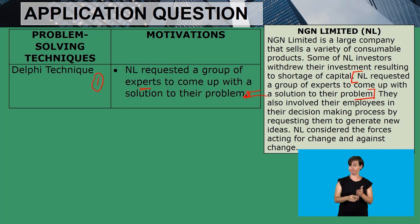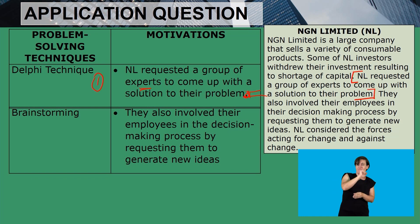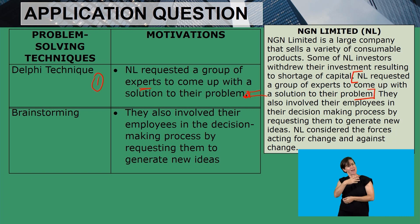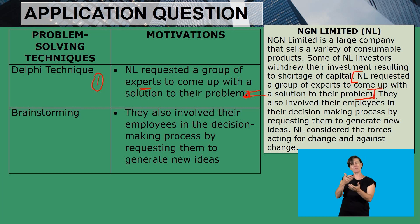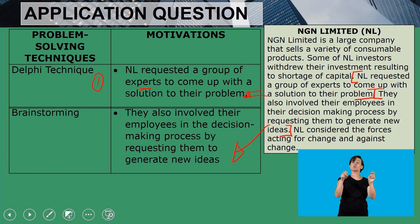The second technique is Brainstorming. The motivation from the scenario: 'They also involved their employees in their decision making process by requesting them to generate new ideas.' When employees are involved, they feel part of the group and are given freedom to contribute. This is taken word for word, directly as-is from the scenario.